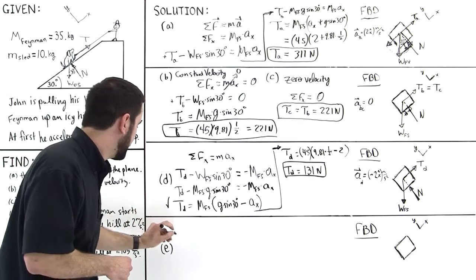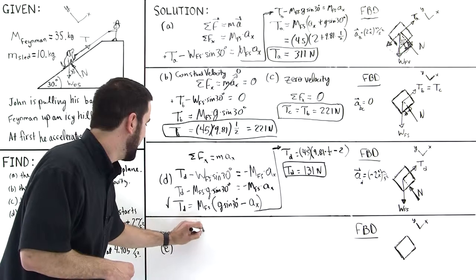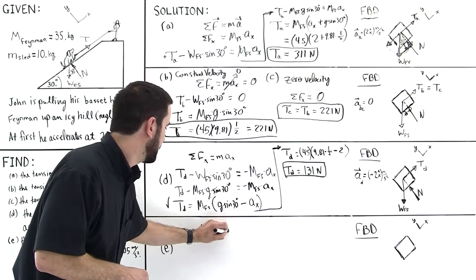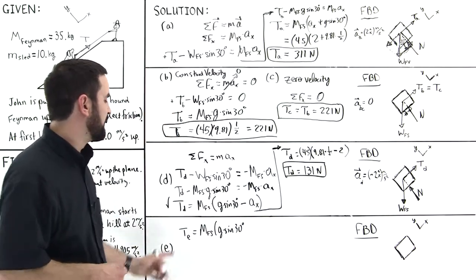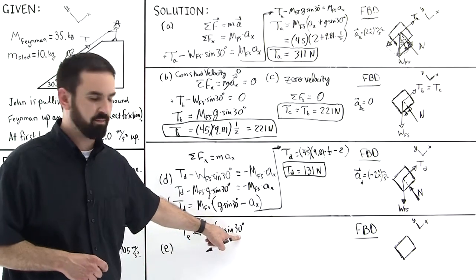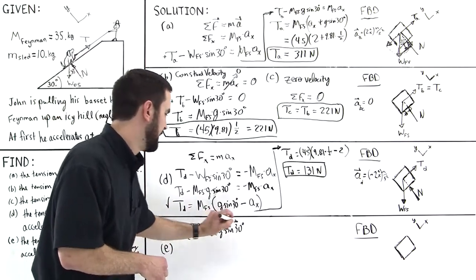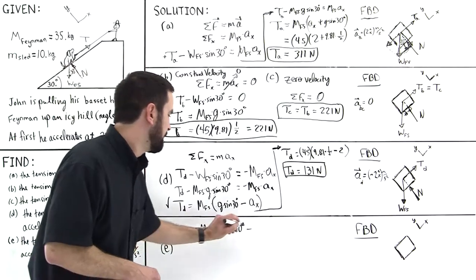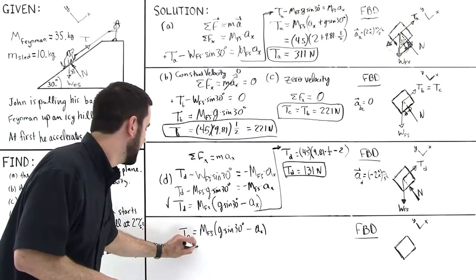So we say the tension in part E is equal to the mass of Feynman plus the sled times G times the sine of 30 degrees. So if you were to make note of this equation, you would, you know, this would be whatever the angle of the incline would be. This would be theta in general if you were going to use this for any other problem. Minus, and then this would be the mass of the object that's sliding down, minus a sub x, like so. Plugging in numbers, this is 45.